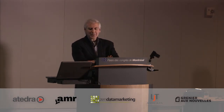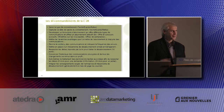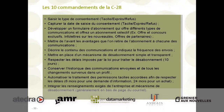Les 10 commandements de l'AC18, pour essayer de récapituler parce que ça peut devenir mêlant. Saisir le type de consentement — tacite, express ou refus. Capturer la date de saisie du consentement, peu importe. Développer un formulaire d'abonnement qui offre différents types de communication et un abonnement sélectif. Mettre de l'avant les avantages que l'on retire à s'abonner à chacune des communications. Décrire le contenu et indiquer la fréquence. Mettre en place un mécanisme de désabonnement simple et transparent — des fois on clique et on n'est jamais désabonné — donc il faut que ce soit simple, transparent, avec une réponse dans les dix jours.